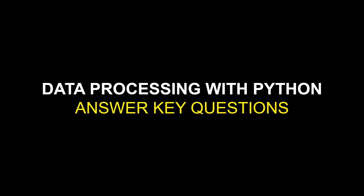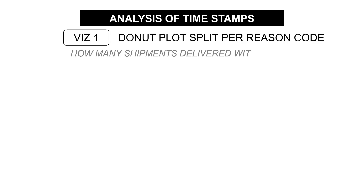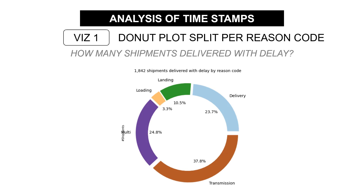How can you perform data processing with Python by answering these basic operational questions? First, how many shipments are delivered with delay? You can build a simple donut plot split by reason code. The reason code explains which step of the distribution chain has impacted the overall time — it can be delivery, transmission, loading, or multiple causes. The calculation is simple: if a targeted timestamp has been missed, that leg is responsible for the delay.